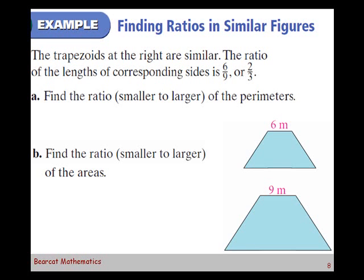It says find the ratio, smaller to larger, of the perimeters. So if the ratio of the sides is 2 to 3, what's the ratio of the perimeters going to be according to the theorem we just looked at? 2 to 3. Yeah, it's a slam dunk. If the ratio of the sides is 2 to 3, what's going to be the ratio of their areas?